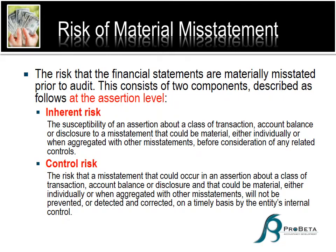Risk of material misstatement is defined in the international standards of auditing as the risk that the financial statements are materially misstated prior to audit, which consists of two components: inherent risk and control risk. Inherent risk is the susceptibility of an assertion about a class of transaction, account balance, etc., to material misstatement. Control risk is the risk that a misstatement could occur and not be detected and corrected by the client's system of internal control.